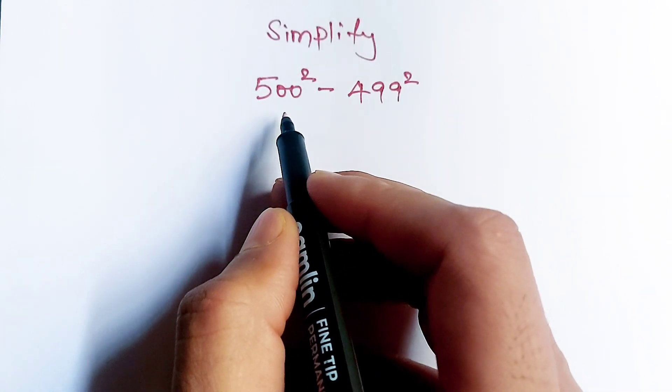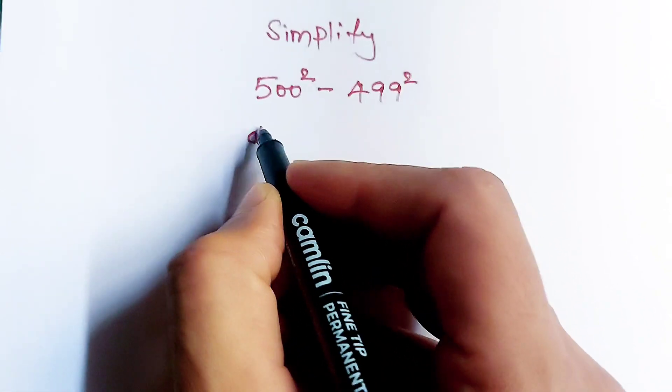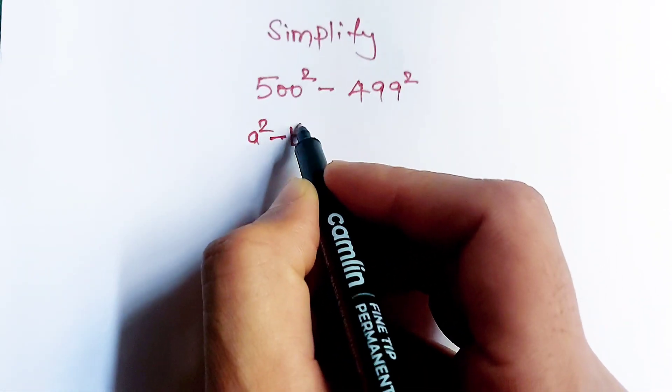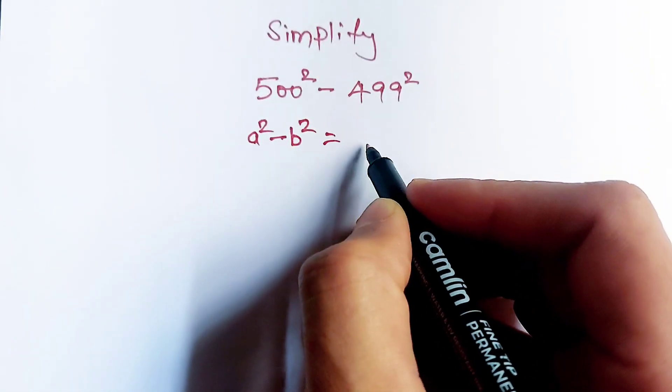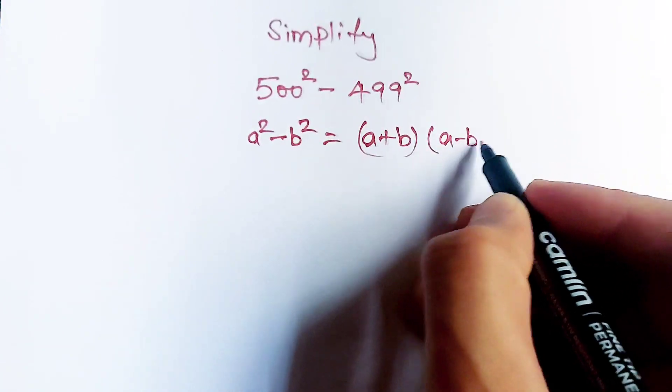Now we will solve it by using an algebraic formula and that formula is a square minus b square. This is equal to a plus b multiply a minus b.